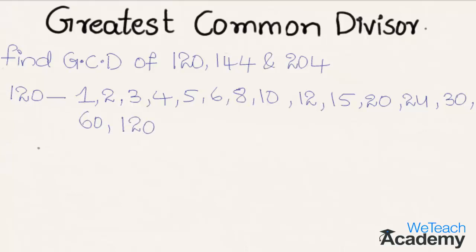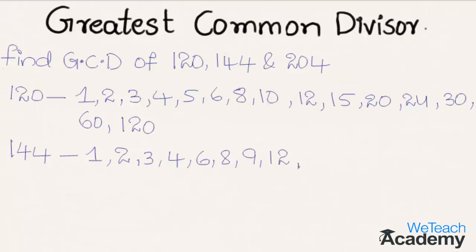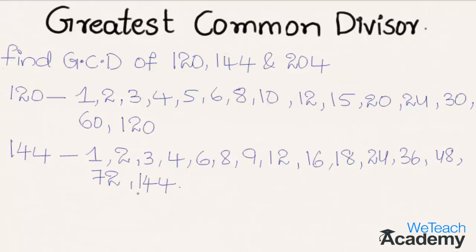Now let us consider the factors for 144. So 144 is divisible by 1, 2, 3, 4, 6, 8, 9, 12, 16, 18, 24, 36, 48, 72, and 144 itself. These are all the factors of 144.